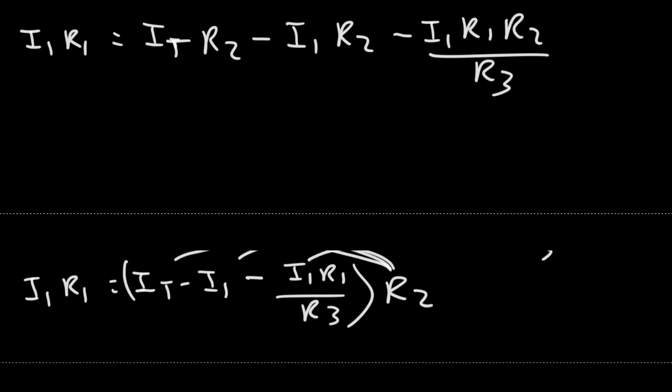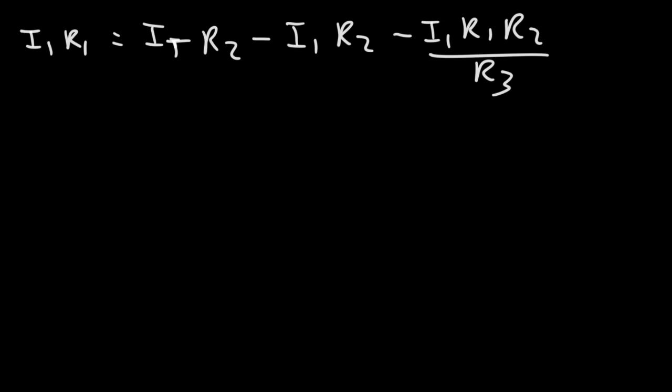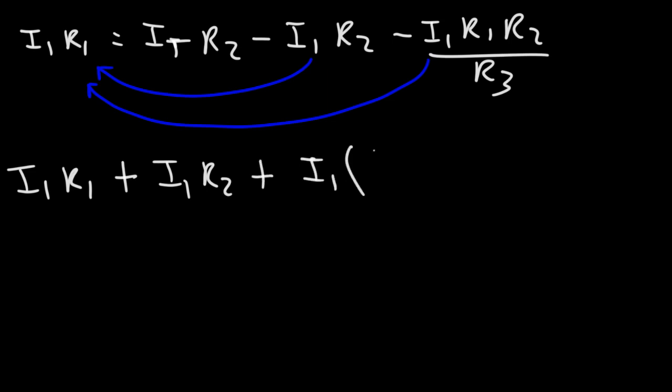Now, every term that has an I1 in it, we're going to move it to the left side of the equation. So that's this one and this one. On the right side, they have a negative sign in front of them, but when we move it to the left side, they will now contain a positive sign. So this is going to be I1 R1 plus I1 R2 and then plus I1 times R1 R2 over R3, and then that's going to equal the total current times R2.